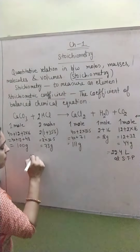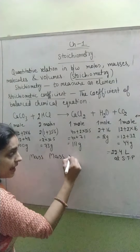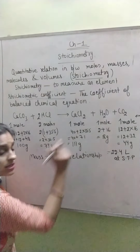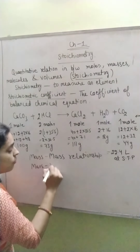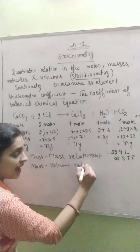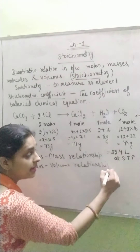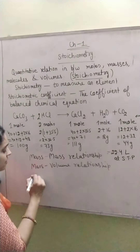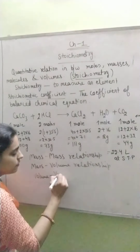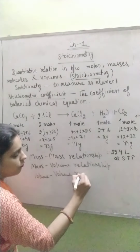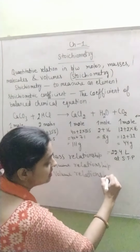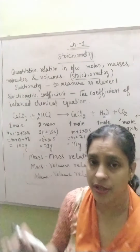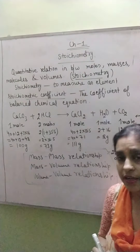We can calculate three types of relationships with the help of stoichiometry. First is the mass-mass relationship — we can find the mass on the left-hand side and right-hand side. Second is the mass-volume relationship, which can also be calculated if the volume is not known in the equation. And third is the volume-volume relationship. So stoichiometry helps us to do calculations in these three different relationships.